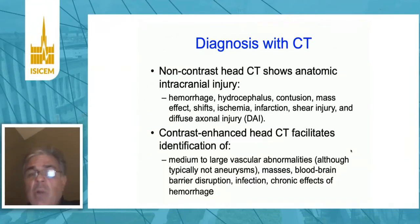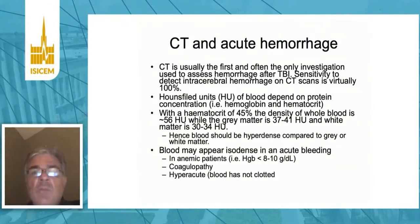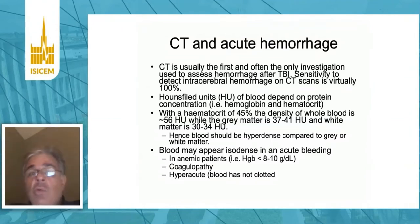A contrast CT, which is not frequently needed, allows us to look at other problems. We might be able to see vascular anomalies, blood-brain barrier disruption, infection, or the chronic effects of hemorrhage. Perhaps its most important role is diagnosing acute hemorrhage, because when we're caring for patients with head injury, the initial fork in the road is deciding whether they need surgical intervention or not. Surgical intervention is required when there's a mass lesion, and CT is really all you need to assess whether there's an acute hemorrhage after traumatic brain injury.